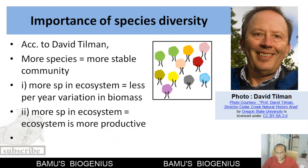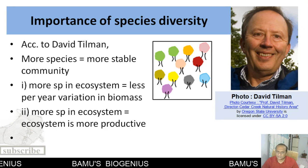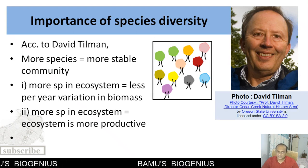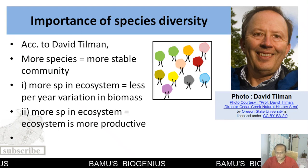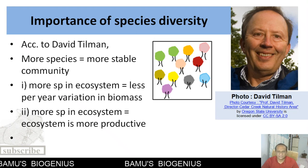For a stable ecosystem, species diversity or species richness is very important. To study changes in an ecosystem, we have to set up outdoor plots and study the effect of species diversity and its relation with ecosystem stability. Such experiments were done by David Tillman, who concluded that if more species are present, the community is more stable.